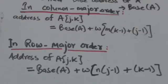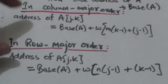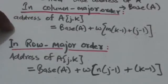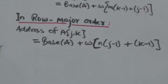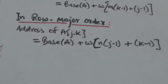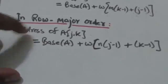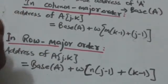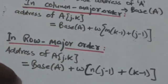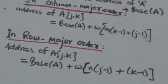If a two-dimensional m×n array A is stored in column major order, then the address of the element in the jth row and kth column can be calculated. Similarly, if array A is stored in row major order, the address of the element in the jth row and kth column can be calculated. In these two formulas, base(A) is the base address of the two-dimensional array A, and W is the number of words per memory location of the two-dimensional array A.